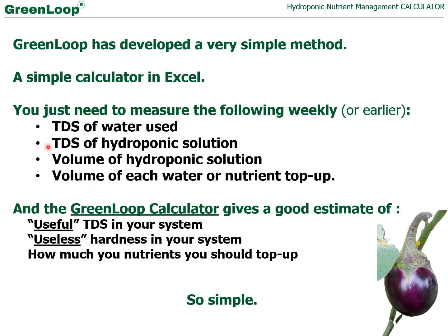With just these four values, the Green Loop calculator will give you a good estimate — not a precise estimate, but a fairly good estimate — of the useful TDS in your system, the useless hardness in your system, and how much nutrients you should top up. It's so simple.